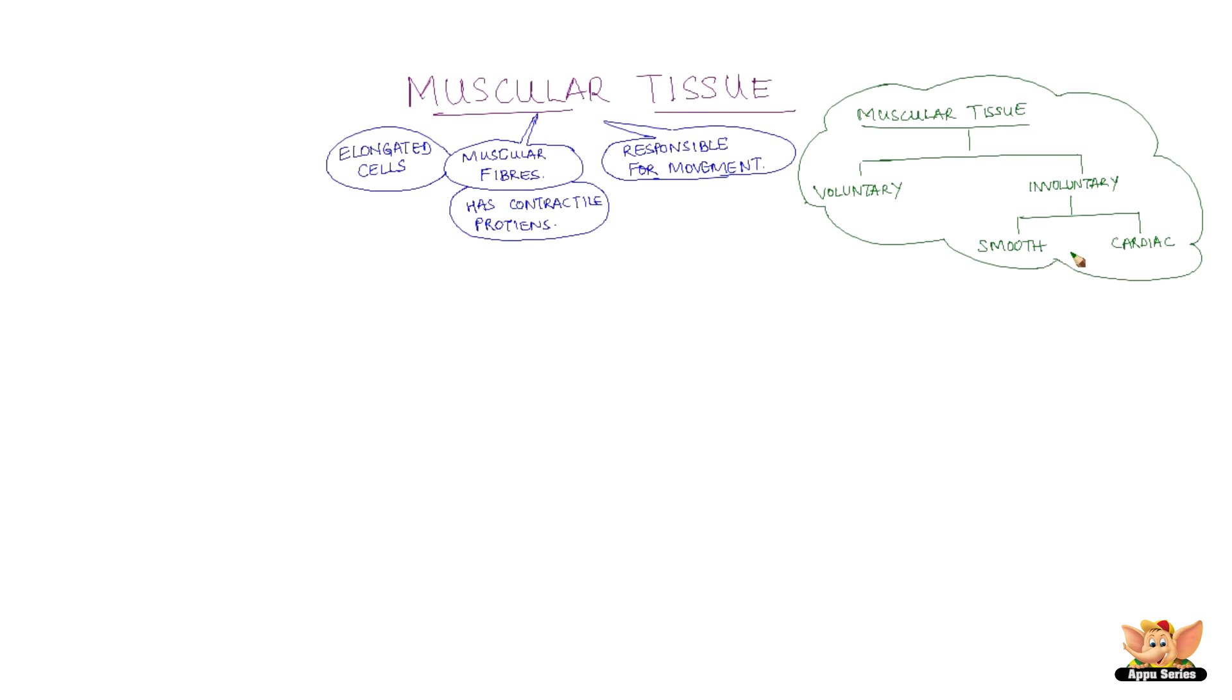As seen earlier, muscular tissue is classified as voluntary and involuntary. Involuntary muscles are further classified as smooth muscles and cardiac muscles.